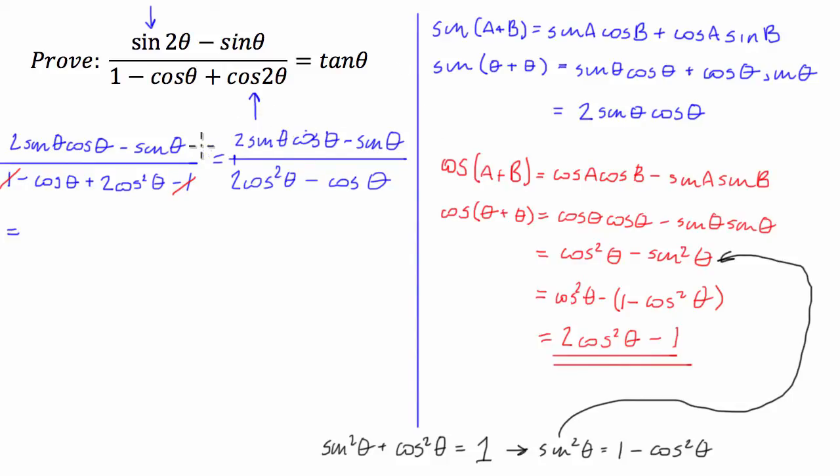So I'm going to factorize the numerator by sine. So I'm going to have sine theta outside of 2 cos of theta minus 1. And then I'm going to factorize the bottom by obviously cosine of theta. And this is going to be 2 cos of theta minus 1.